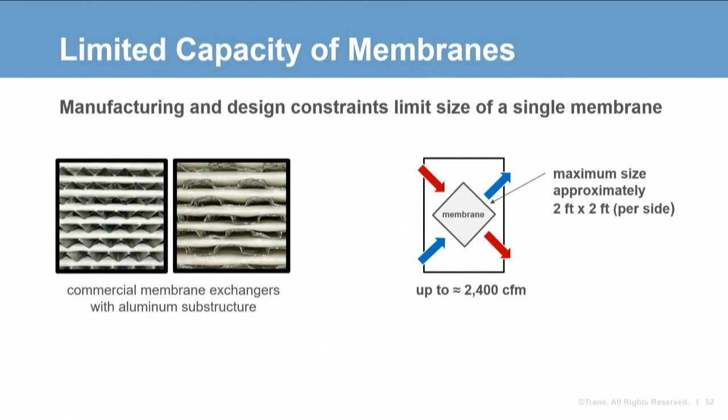Unlike aluminum plate heat exchangers, membrane heat exchangers are made from a pliable membrane material. Most commercial exchangers have aluminum mesh or flutes to provide structural support to withstand static pressure differentials between the supply and exhaust airstreams. Membranes are more limited in size compared to sensible metal plate exchangers — the largest exchangers are approximately 2 feet by 2 feet. Using a 2-by-1 aspect ratio, that's only 2,400 CFM.